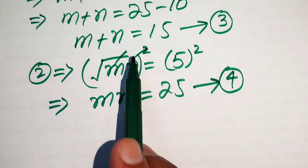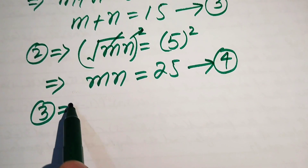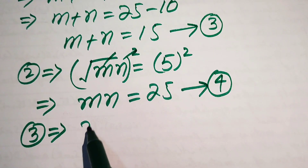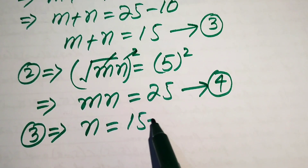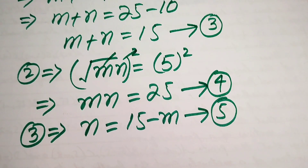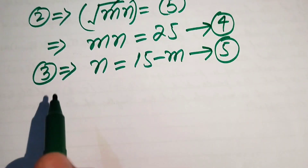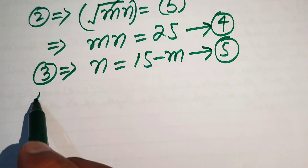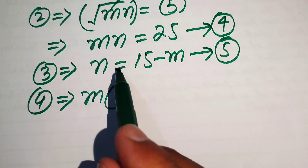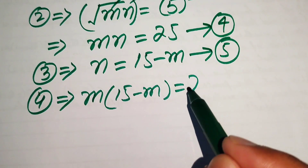We now solve equations 3 and 4 together. From equation 3, m + n = 15, so n = 15 − m. We call this equation number 5. Substituting into equation 4: m·(15 − m) = 25.